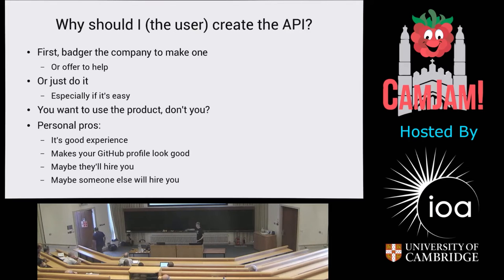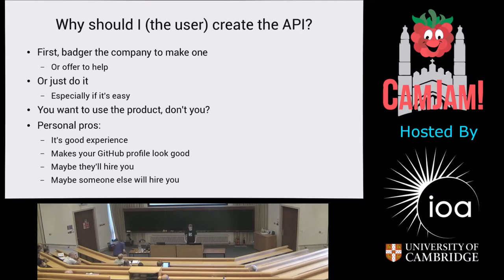It's a really good experience doing this sort of thing. If you're creating an API, you're writing software — there's lots of personal gain there, and it makes your GitHub profile look great. Maybe that company will hire you. If you made a library for Pimoroni for one of their products that didn't have an API, maybe they'd say 'actually this person is really good, we should hire them.' Or maybe somebody else will hire you.